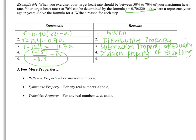The reflexive property: for any real number A, that number A is equal to itself. Any number is equal to itself. The symmetric property: for any numbers A and B, if A equals B, then B equals A. That's just saying you can flip the equation around so it's in the opposite direction. The transitive property is the more interesting one: for any real numbers A, B, and C, if A equals B and B equals C, then A equals C. That one's a little confusing, so we can go over it in class.